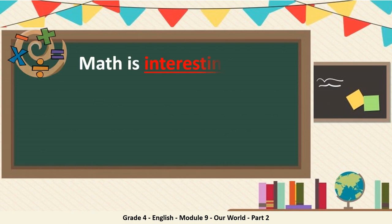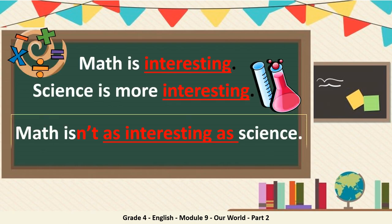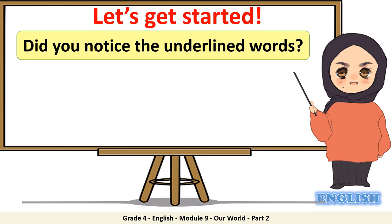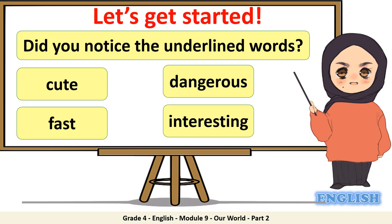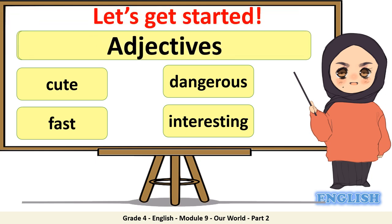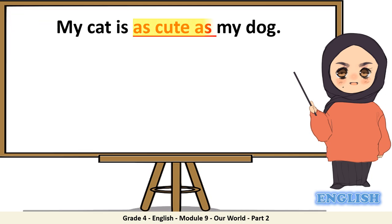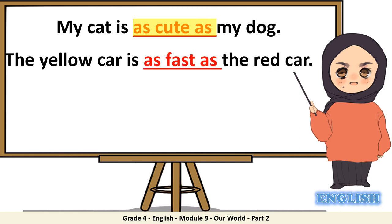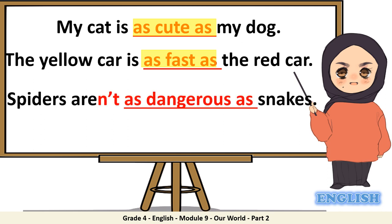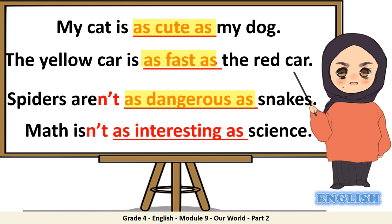Math is interesting. Science is more interesting. Math isn't as interesting as science. Did you notice the underlined words? Cute, fast, dangerous, and interesting. What do we call them? Adjectives. My cat is as cute as my dog. The yellow car is as fast as the red car. Spiders aren't as dangerous as snakes. Math isn't as interesting as science.